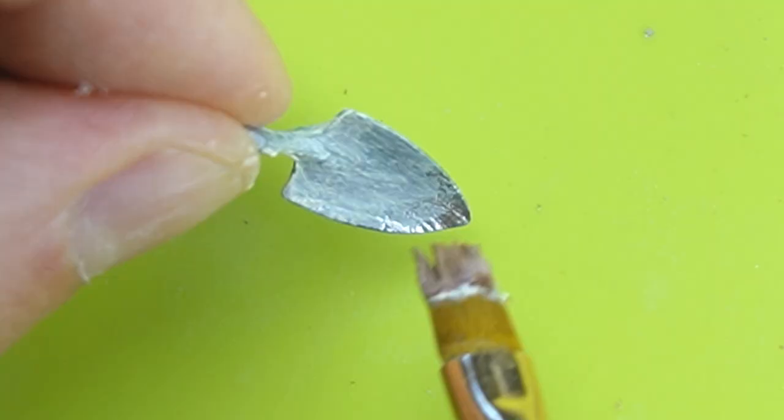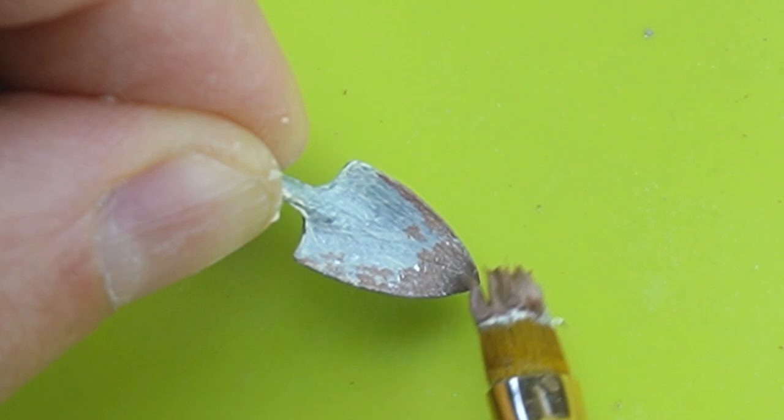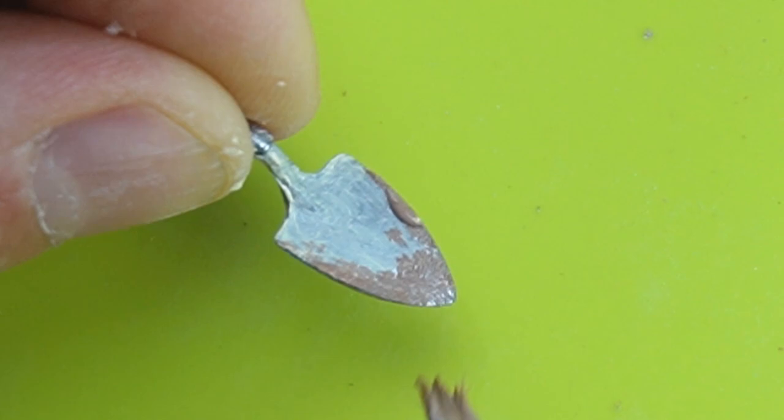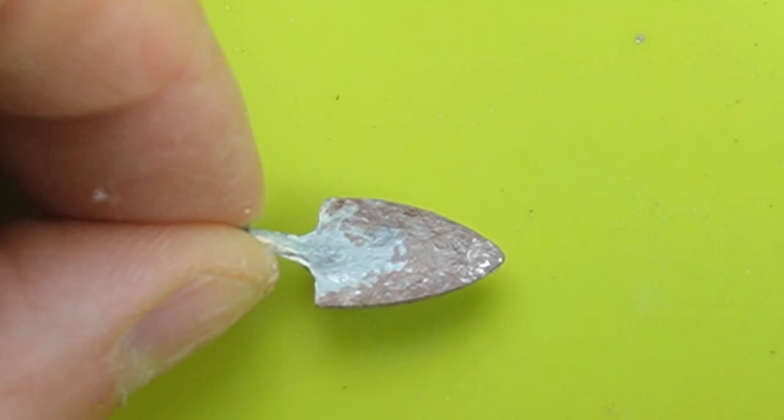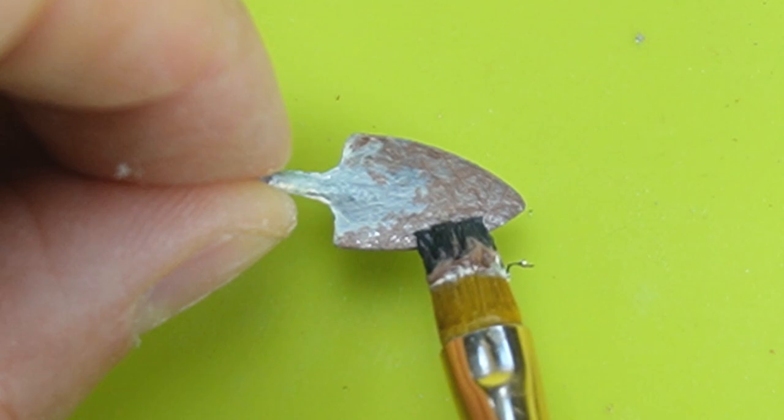Garden shovels take the most damage around the edges so I added some matte mod podge and brown paint. Then I sparingly added some black paint and used my finger to diffuse it.